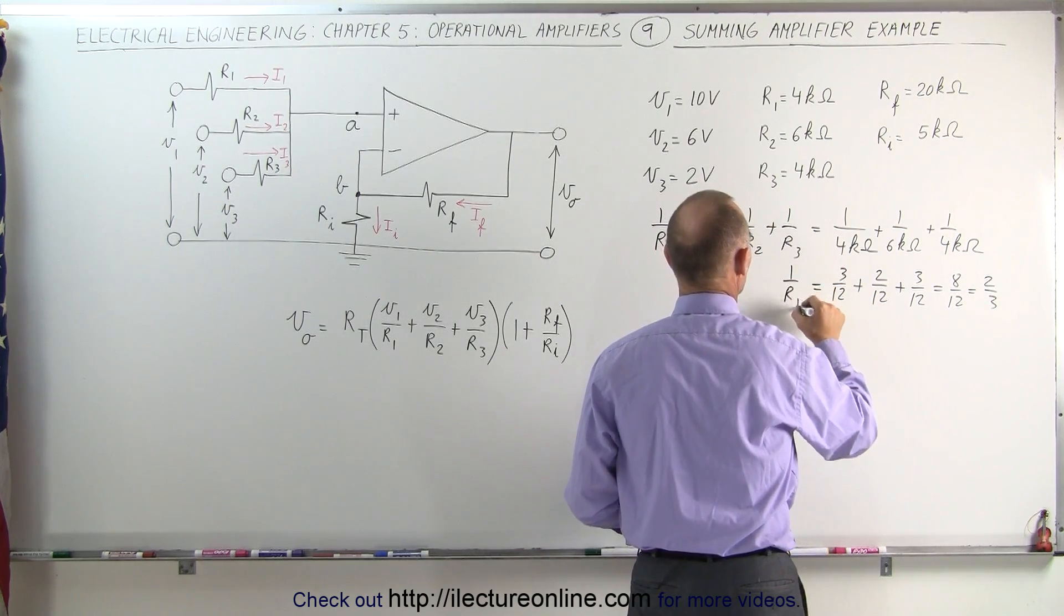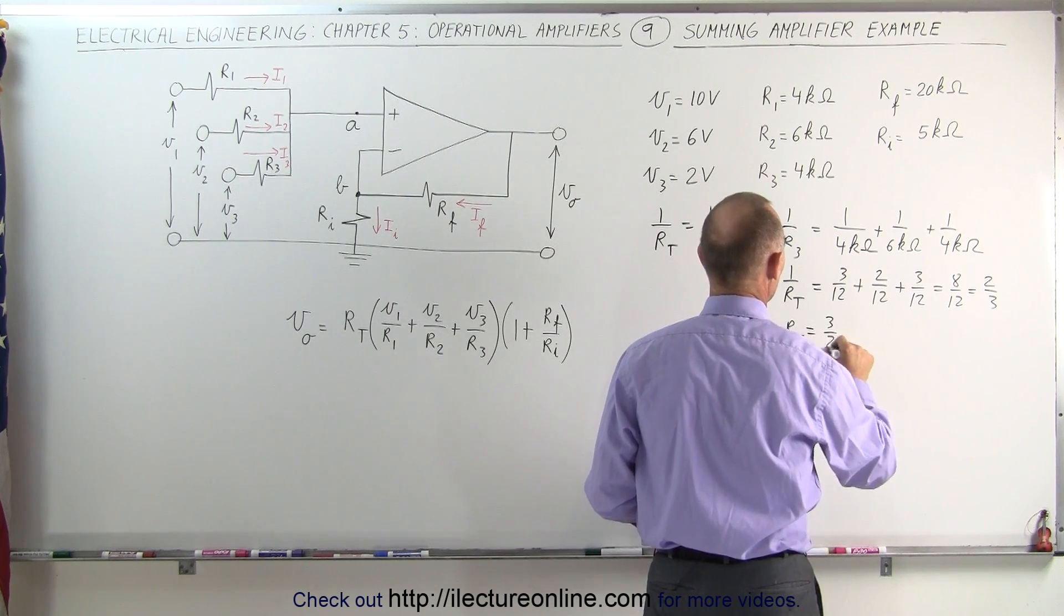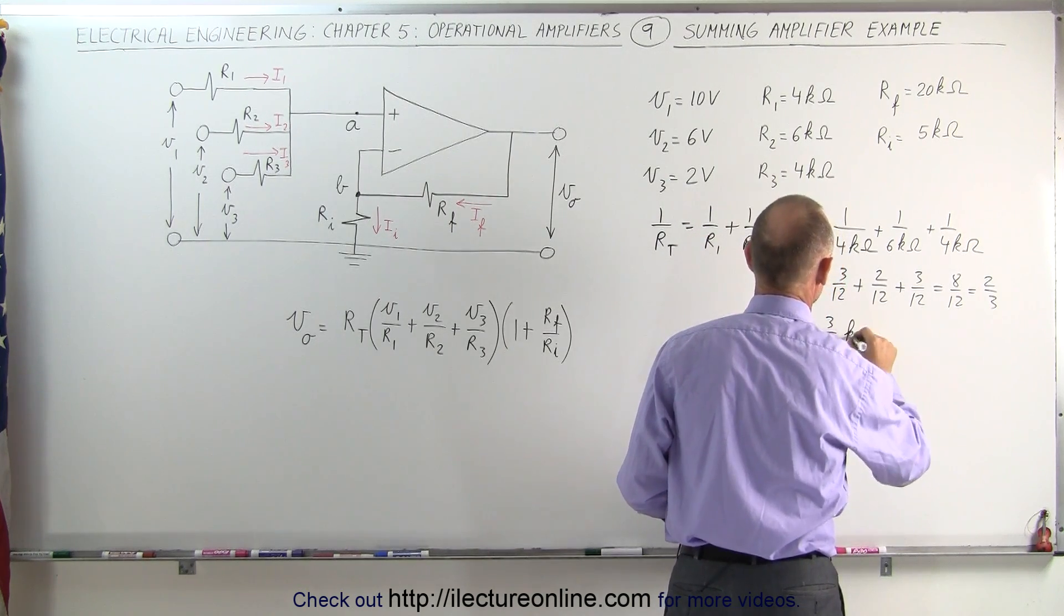1 over r total is equal to 2 over 3, which means r total would be the inverse of that, which is 3 over 2. And of course that would be in terms of k ohms.